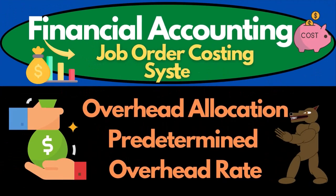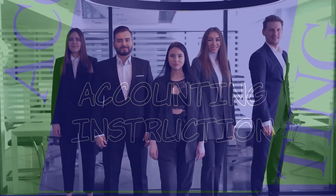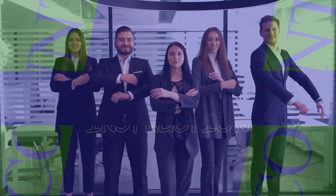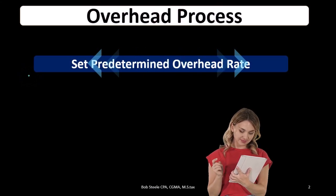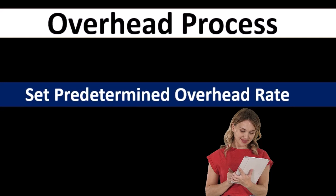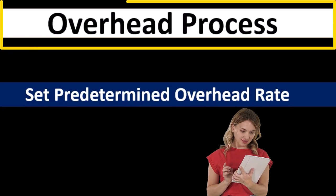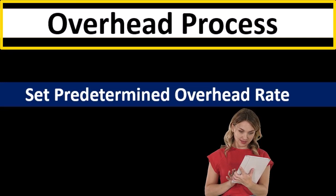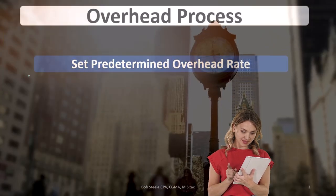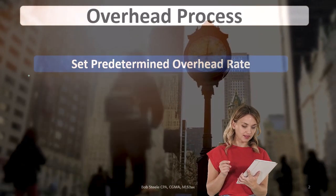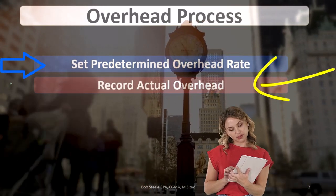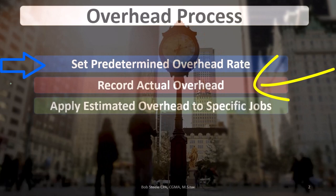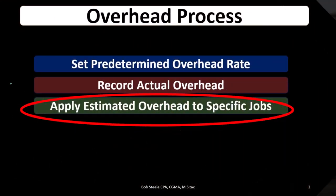In this presentation, we will allocate overhead to jobs using a predetermined overhead rate, which we will see how to calculate. First, we want to take a look at the overhead process — the procedures that overhead will go through in order to record and then allocate it. At the beginning of a time period, we set the predetermined rate, then record the actual overhead incurred, and then apply estimated overhead to specific jobs.